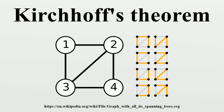Kirchhoff's theorem can be strengthened by altering the definition of the Laplacian matrix. Rather than merely counting edges, label each edge with an indeterminate. Let the (i,j)th entry of the modified Laplacian be the sum over the indeterminates corresponding to edges between the i-th and j-th vertices when i does not equal j, and the negative sum over all indeterminates corresponding to edges emanating from the i-th vertex when i equals j. The determinant is then a homogeneous polynomial in the indeterminates. After collecting terms and performing cancellations, each monomial represents a spanning tree, allowing explicit enumeration of all spanning trees by computing the determinant.